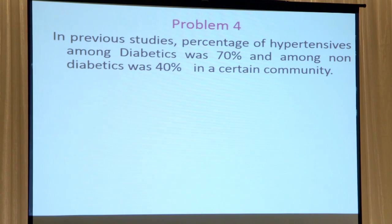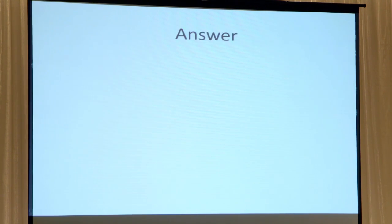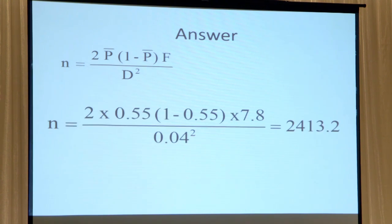Finally, if you have two proportions — for example, diabetes versus non-diabetes patients and the incidence of hypertension, which is higher in diabetics at about 70% versus 40% — and you want to calculate sample size to determine a 4% difference in hypertension incidence, the formula is slightly different. You take the average frequency or proportion between the two groups. Even if you don't know the previous proportion, you can use an average of 0.5. From that, you calculate N, and in each group you will need 2,400 patients.